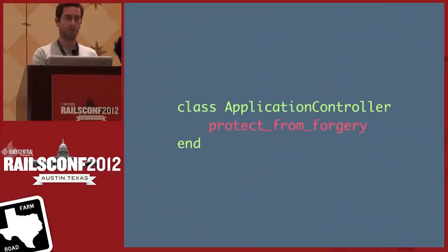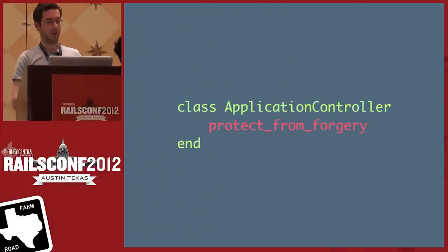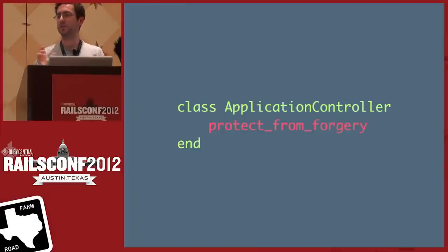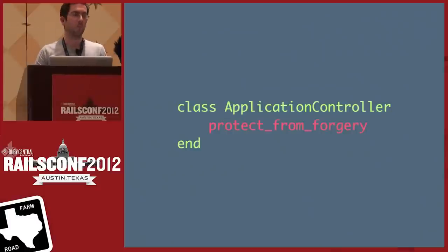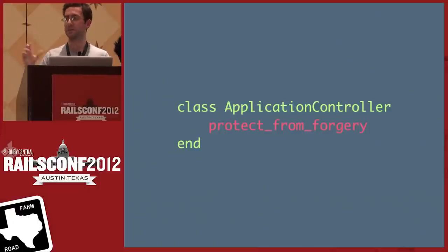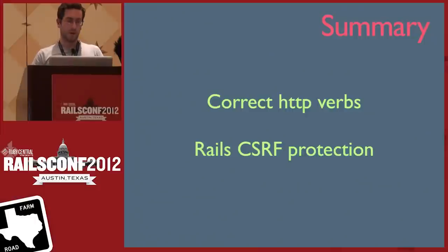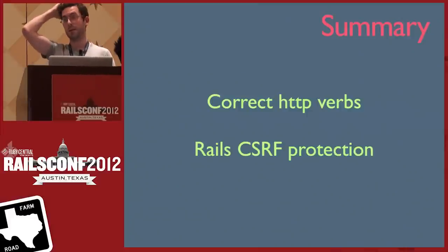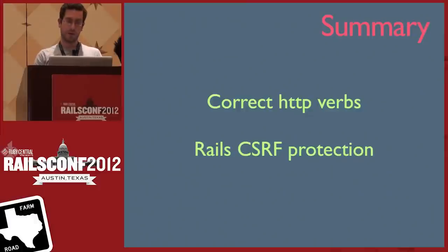Rails makes CSRF protection really easy. Just add protect_from_forgery in your application controller — it automatically outputs the hidden form field on forms built with the form helpers, and validates on submission. If it doesn't match, it raises a 422 ActionController::InvalidAuthenticityToken. One thing to bear in mind: if you're doing page caching or action caching, the authenticity token will get cached too, which can cause errors — so you may need to be careful there.